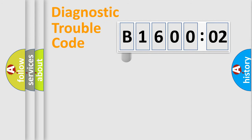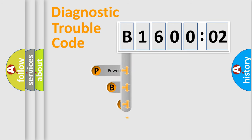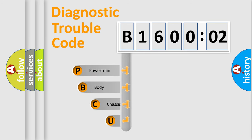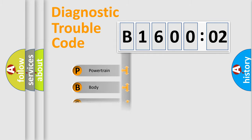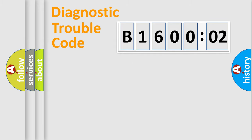First, let's look at the history of diagnostic fault code composition according to the OBD2 protocol, which is unified for all automakers since 2000. We divide the electric system of automobile into four basic units: Powertrain, Body, Chassis, and Network.